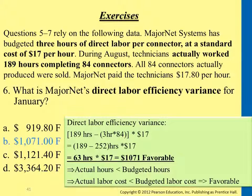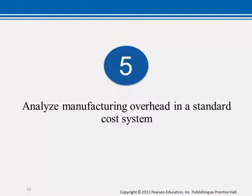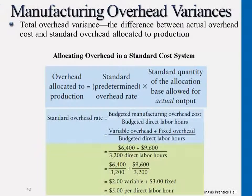So we talked about direct materials, breaking it down to price variance and efficiency variance, and direct labor, also broken down to price variance and efficiency variance.